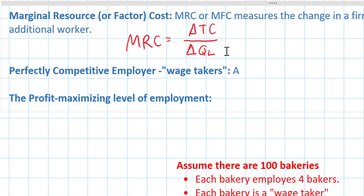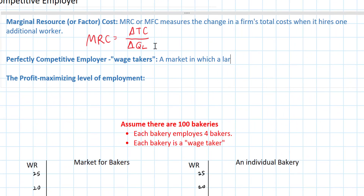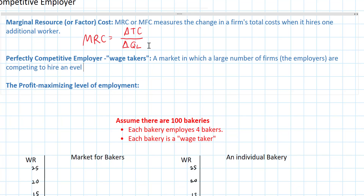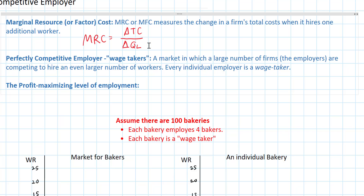Rather, we're looking at a market in which a large number of firms, which are the employers, are competing to hire an even larger number of workers. Every individual employer is a wage taker, meaning an individual firm can hire as many workers as it wants at the market equilibrium wage rate. Each firm is so tiny compared to the total labor market that it has no influence or power over the market wage rate.